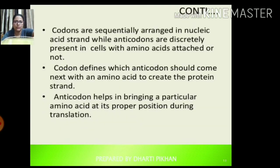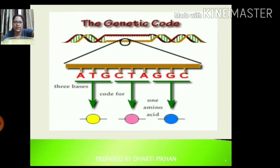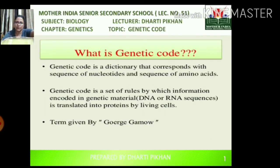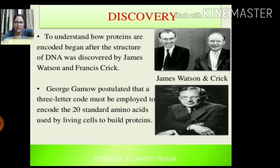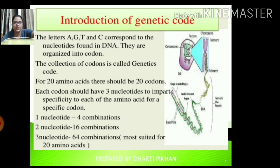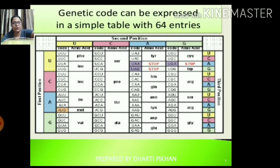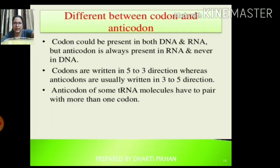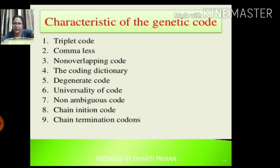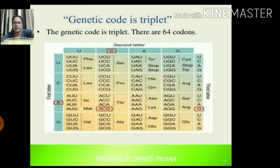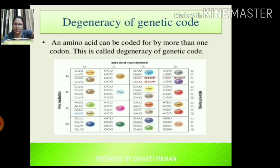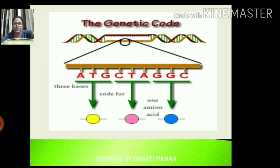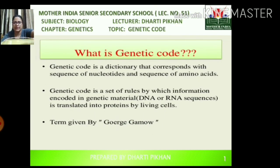This is all for today's lecture. To summarize: we covered what genetic code is, its discovery, the introduction defining how bases and amino acids relate, the 64 entries in the genetic code table, types of codons, the difference between codon and anti-codon, characteristics of the genetic code including its triplet form, and finally the degeneracy of the genetic code. We will continue in the next lecture — have a great day.